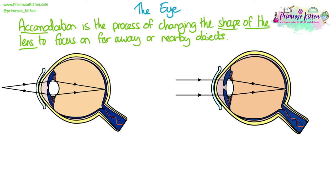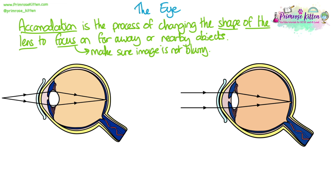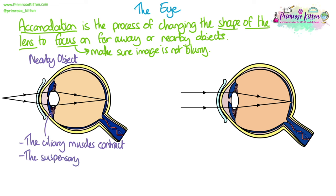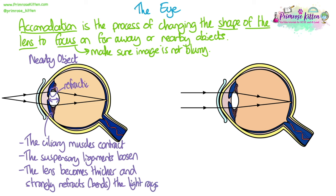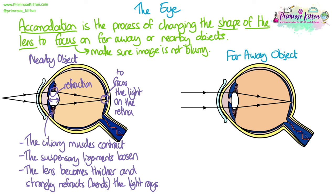Accommodation is the process of changing the shape of the lens to focus on far away or nearby objects — making sure the image is not blurry. When focusing on a nearby object, your ciliary muscles contract. The suspensory ligaments loosen and this allows the lens to become thicker and strongly refract the light waves, pointing them to the back of the retina. Refraction is the bending of light, and the whole point is to focus the light reflected off the object onto the retina so that we can see it.